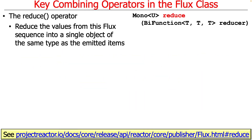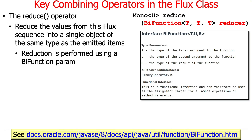Let's talk about the reduce operator first. What this does is it reduces the values from the flux, which comes as a stream or a sequence, into a single result that's the same type as the type being emitted from the stream. You can see here it takes something called a BiFunction, which is a functional interface introduced in Java 8 and beyond, used to take two parameters and do something to them and yield a single result.